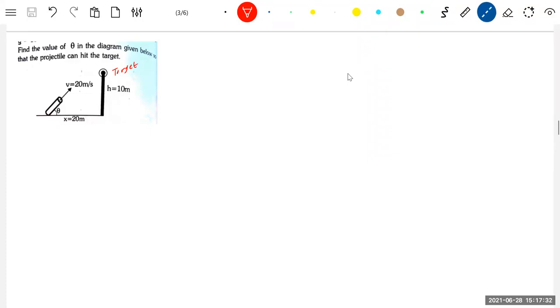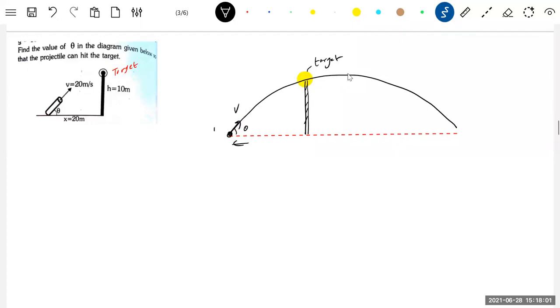I think the entire question revolves around this: the target must lie on the trajectory. The target has to lie on the trajectory. Only then will this projected ball go and strike it. When this ball will go and strike the target, only if the target lies on the trajectory. This is very fundamental.